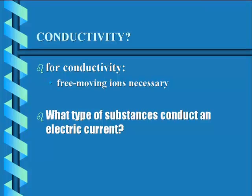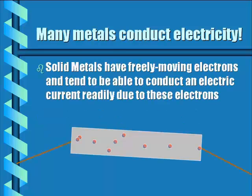Let's take a look at conductivity. For conductivity, free-moving ions or free-moving charged particles must be present. So what type of substances conduct an electrical current? Solid metals have freely moving electrons and tend to be able to conduct an electrical current readily due to these free-moving electrons.